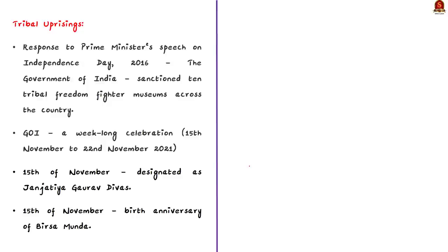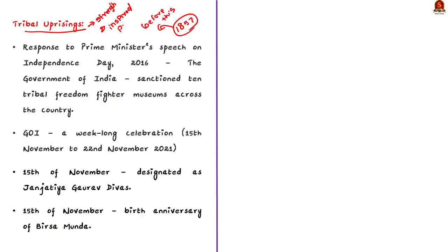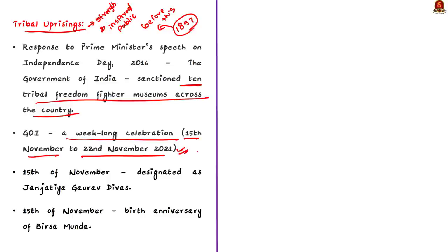Most of us think the 1857 revolt was the first major show of resistance against the British, but many incidents before 1857 indicated that discontent towards the alien power was rising. This dissatisfaction was expressed through outbursts of resistance by various groups in various parts of India, and the uprisings by tribal communities are one such example. By fighting for their cause, they strengthened India's freedom struggle and inspired Indians all over the country. However, the public at large is not much aware of these tribal heroes. In response, the government of India has sanctioned 10 tribal freedom fighter museums across the country, and has planned a week-long celebration from 15th to 22nd November 2021 to commemorate 75 years of glorious history of tribal people, their culture and achievements.